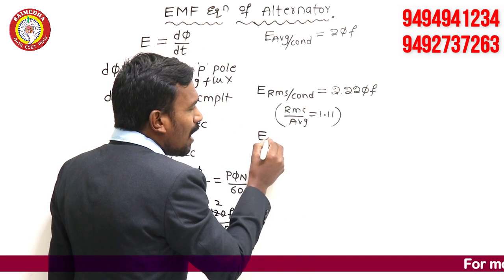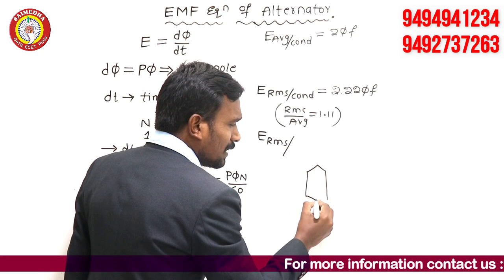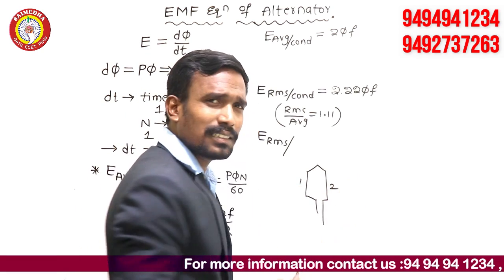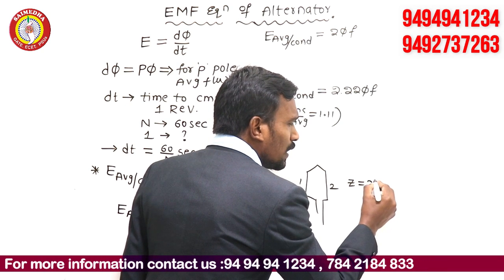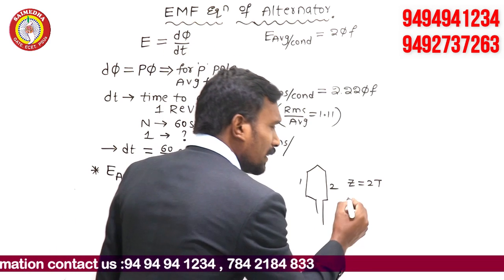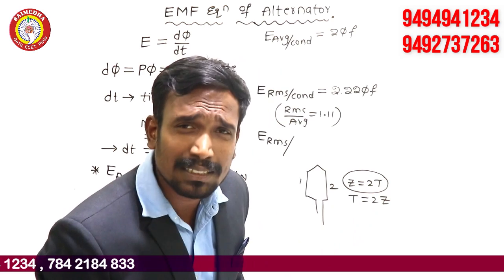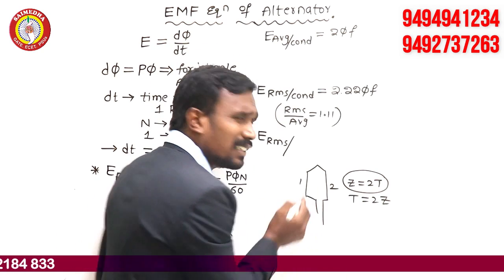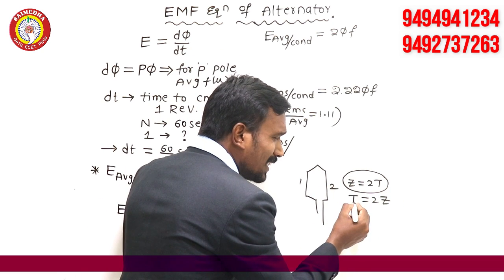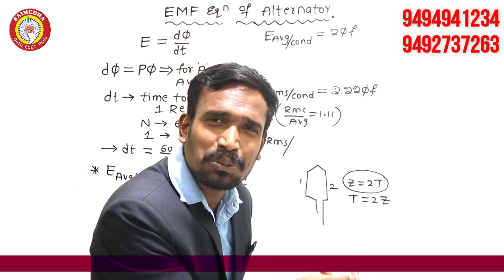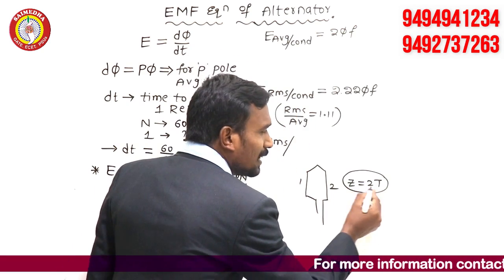Now I want E RMS per turn, not per conductor. Every turn has two conductors, so Z = 2T. For example, if you have 1 turn, substitute T = 1: Z = 2×1 = 2 conductors. Be careful — do not write T = Z/2, that is a mistake. Mathematically, Z = 2T. So in the place of conductors, we can write 2 times of turns.